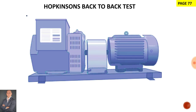This test is also known as the Hopkinson's back-to-back test, where we take two identical machines, we couple them together mechanically, and electrically they are connected in parallel.